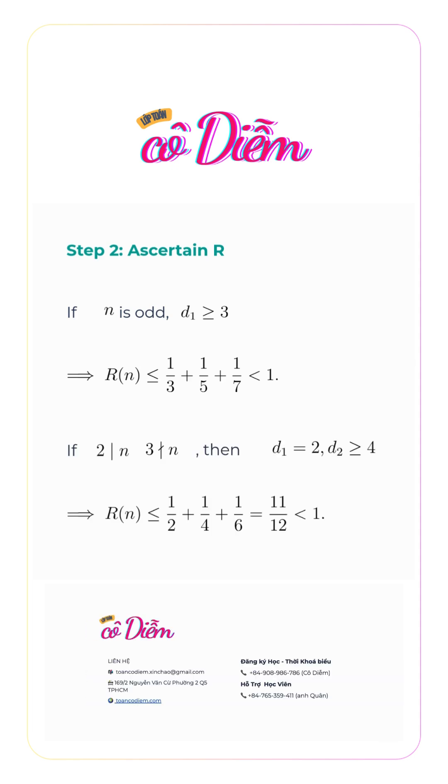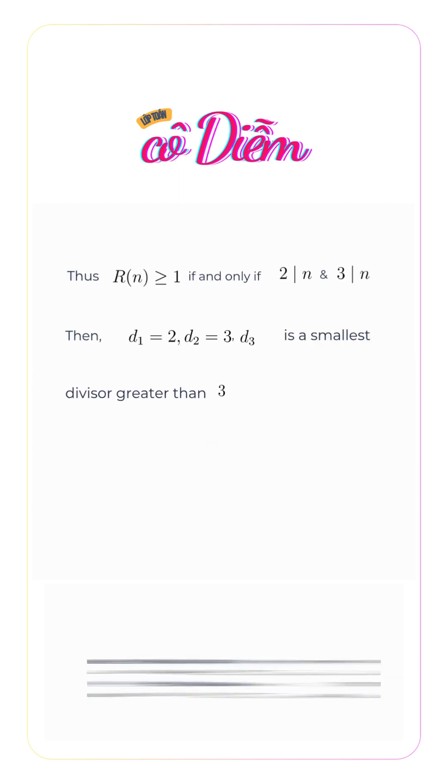If 2|n but 3∤n, then d_1 = 2 and d_2 ≥ 4. R(n) ≤ 1/2 + 1/4 + 1/6 = 11/12 < 1. For R(n) ≥ 1,